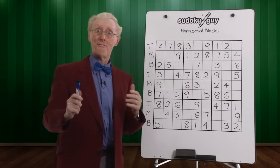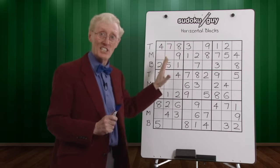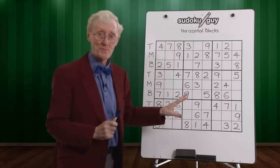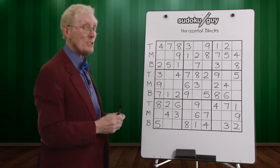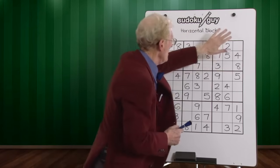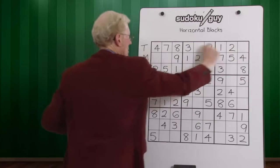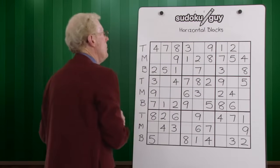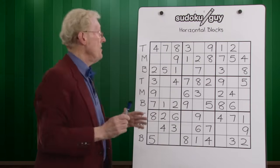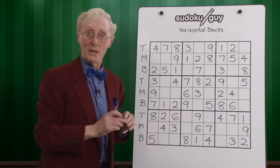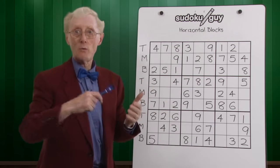Here we go with our first puzzle. Now, let me tell you up front, this is a really, really easy puzzle — there are lots of numbers there. But I'm going to show you the step-by-step way of getting started. Remember I talked about the horizontal blocks: top, middle, bottom — top row, middle row, bottom row. What I look for is a number that's in two of those blocks but not in the third one. We go sequentially from one up to nine.